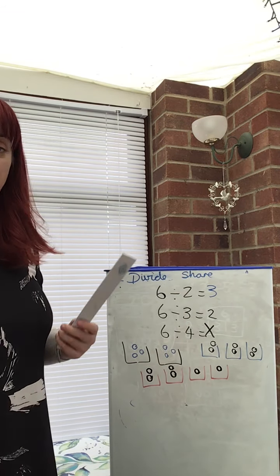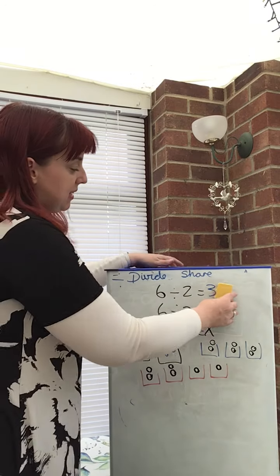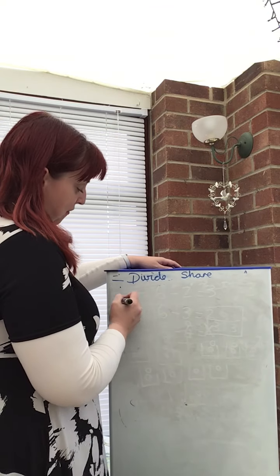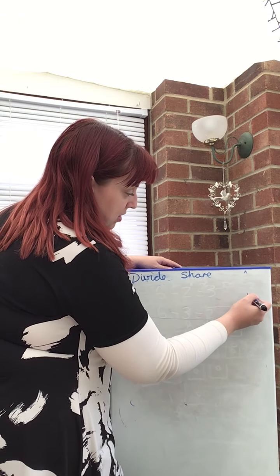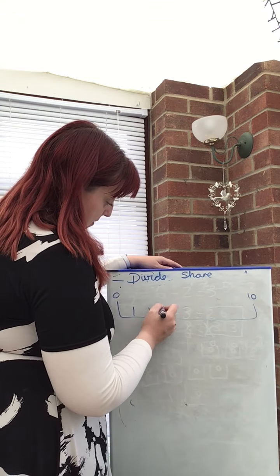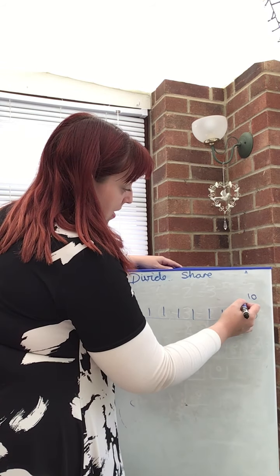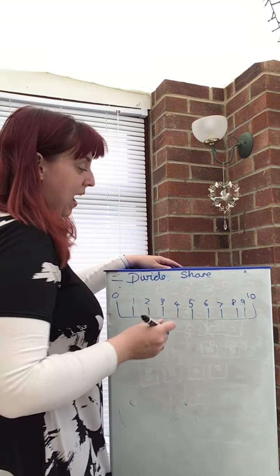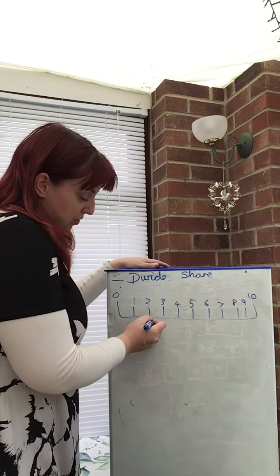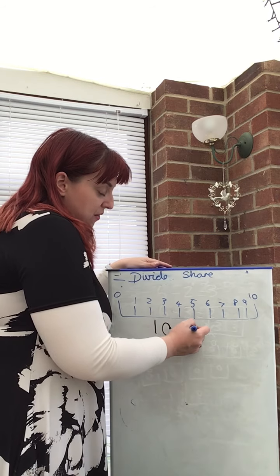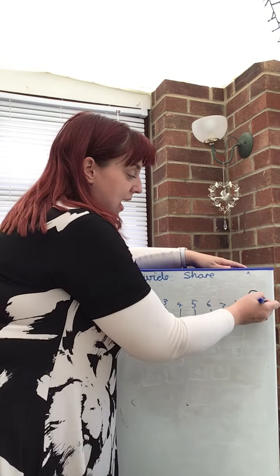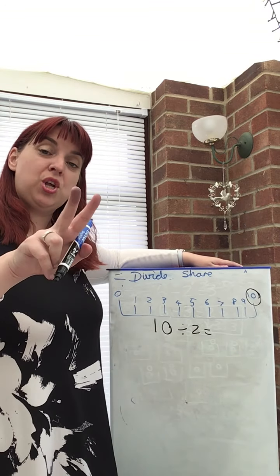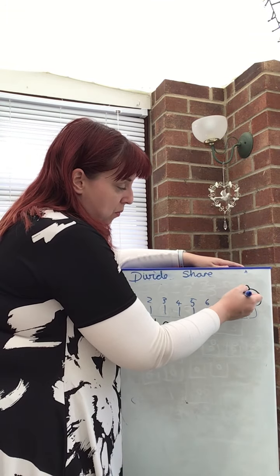Now, you can also show your work on a number line. So actually seeing how many groups will fit into that number. So for example, if I had my number line to ten. So imagine I want to do the calculation ten divided by two. I'm going to start on ten. I'm going to do bunny hops of counting backwards in groups of two.